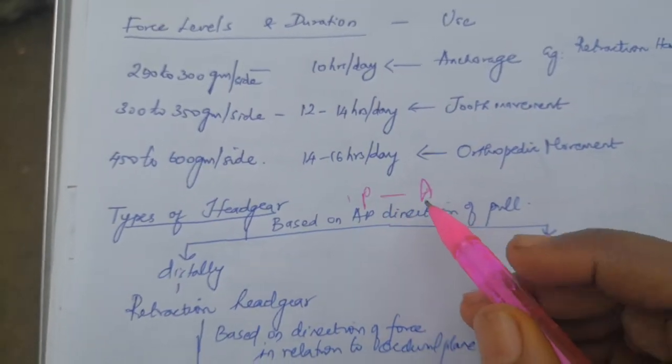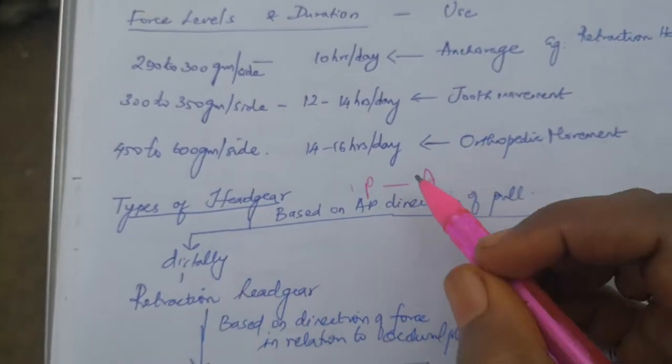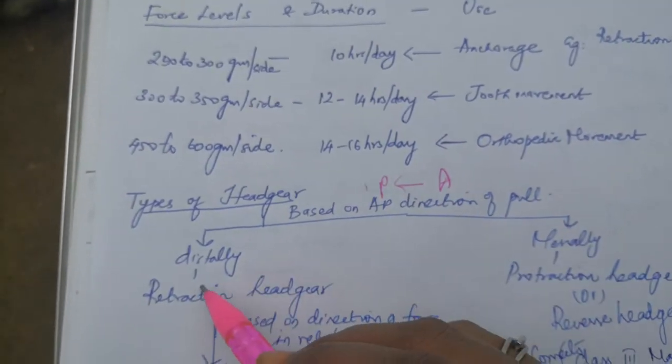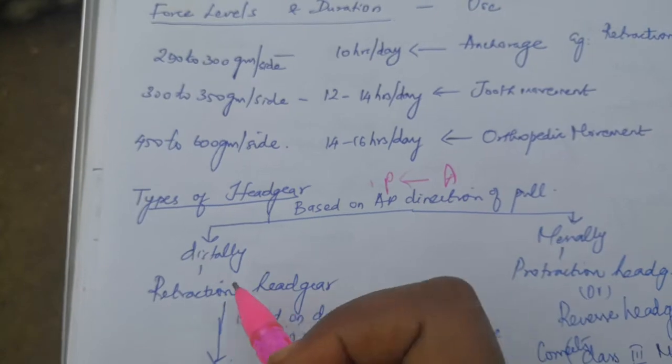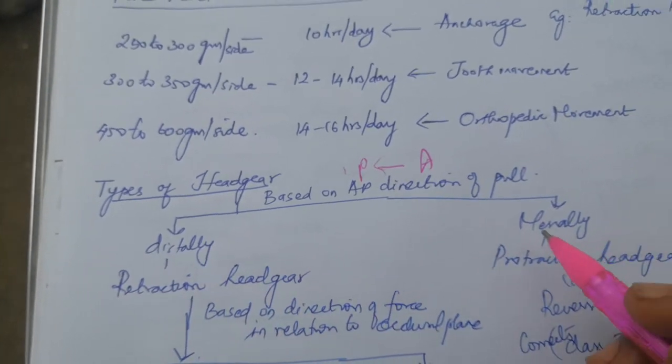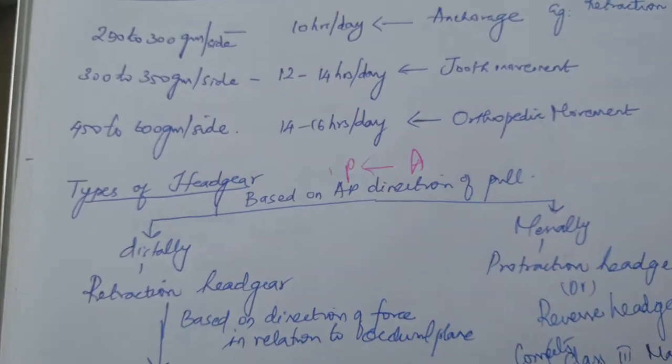When we are exerting force distally in the anteroposterior direction, pulling back distally, it's called retraction headgear. If we are moving towards the midline, that is protraction headgear.